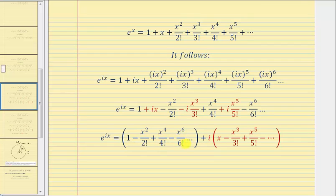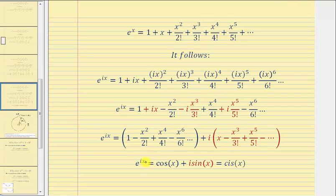And we should recognize that this is the power series for cosine x, and this is the power series for sine x, which gives us Euler's formula. We've just shown that e raised to the power of ix equals cosine x plus i sine x, sometimes abbreviated as cis x.